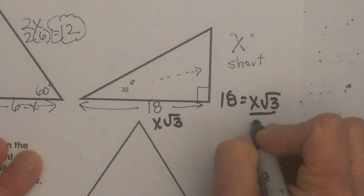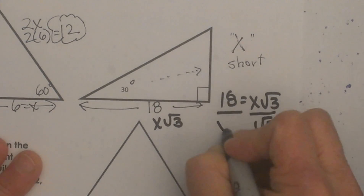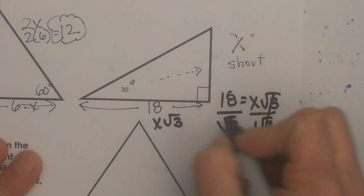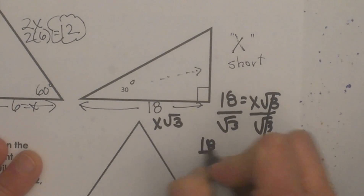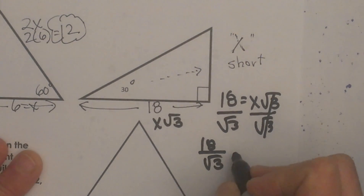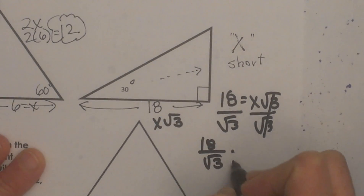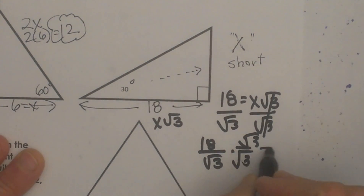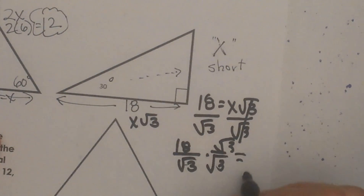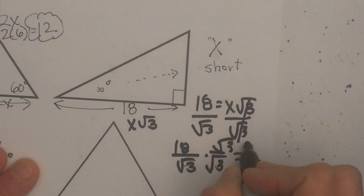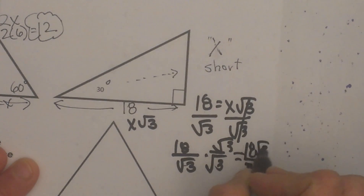Now I am going to solve for x, the short leg. I divide both sides by the square root of 3. Those sides cancel and I have 18 divided by the square root of 3. That needs to be rationalized, so I multiply by root 3 over root 3, which gives me 18 root 3 over the square root of 9 — and the square root of 9 is just 3.